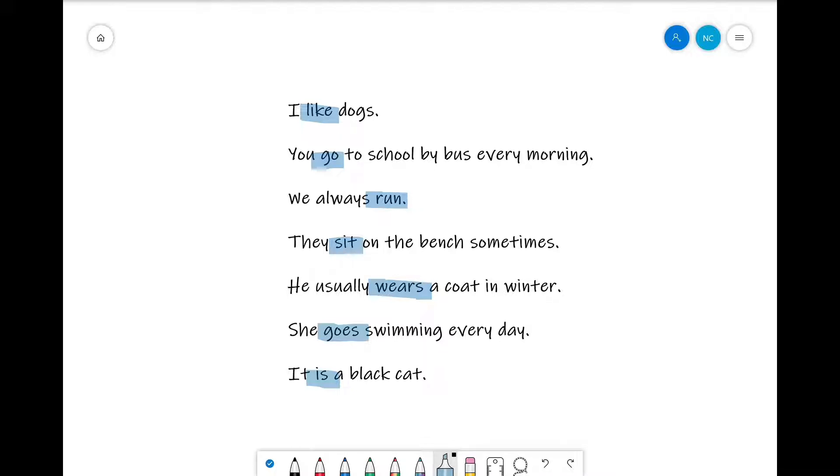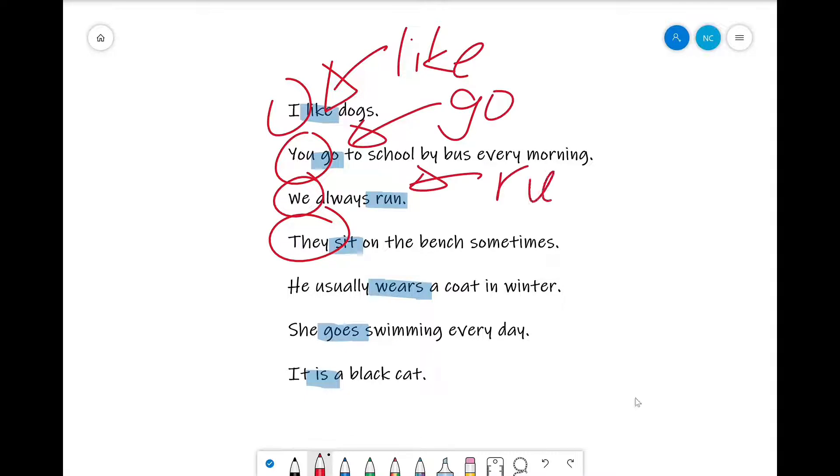As you can see, for I, you, we, they, we have nothing added to the verb. So the verb stays how it used to be. From like, it stays as like. From go, it stays as go. From run, it stays as run. From sit, it stays as sit.